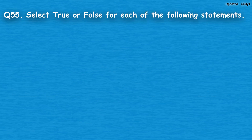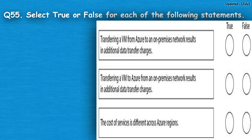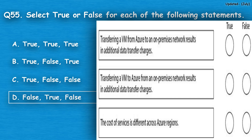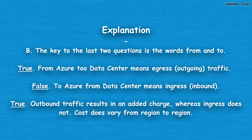Question number 55: Select true or false for each of the following statements. Option A: true, true, true. Option B: true, false, true. Option C: true, false, false. Option D: false, true, false. The correct answer is option B — true, false, true. The key to the last two questions is the words 'from' and 'to.' True: from Azure to data center means egress (outgoing) traffic. False: to Azure from data center means ingress (inbound). True: outbound traffic results in an added charge, whereas ingress does not. Cost does vary from region to region.